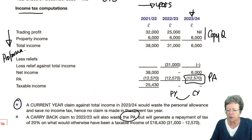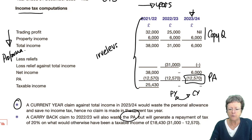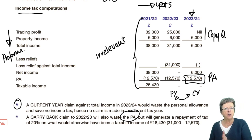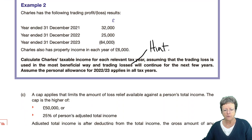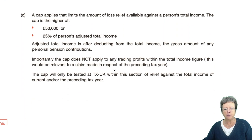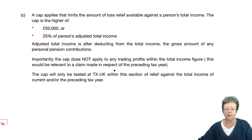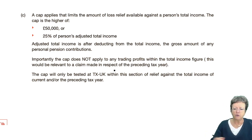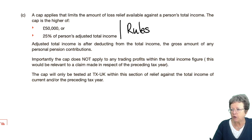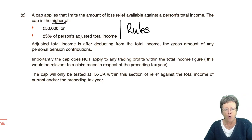You can only do current year and/or previous year — going back that one year. I mentioned earlier that there is a cap that applies which limits the amount of loss relief available against someone's total income. The loss relief cap to remember is the higher of £50,000 or 25% of a person's adjusted total income.